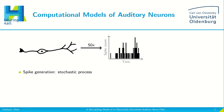If we stimulate an auditory nerve fiber either acoustically or electrically, it can produce an action potential or a spike. If we repeat this process, we might get a spike time at a slightly different time point because the spike generation is a stochastic process.